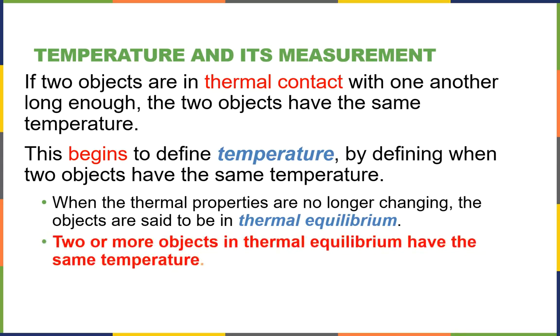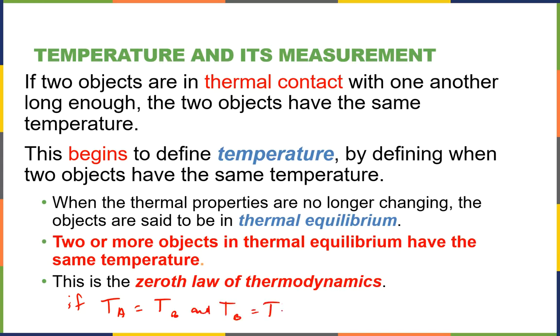If two objects are in thermal contact with one another long enough, they have the same temperature. That's the thermal equilibrium we talked about. So that's the beginning to the definition of temperature. The zeroth law of thermodynamics, if you write it out, you can write it as if temperature A equals temperature B, and temperature B equals temperature C, then temperature A equals temperature C. If you say it in words, it's if object A is in thermal equilibrium with object B, and object B is in thermal equilibrium with object C, then object A is in thermal equilibrium with object C.